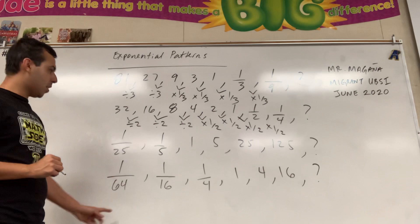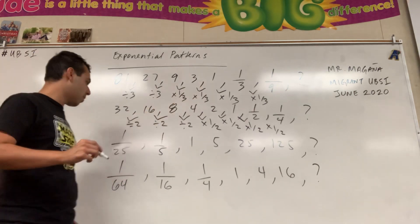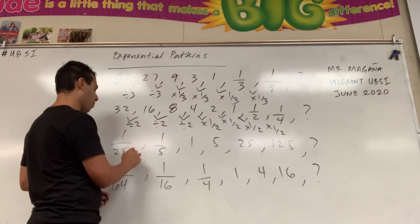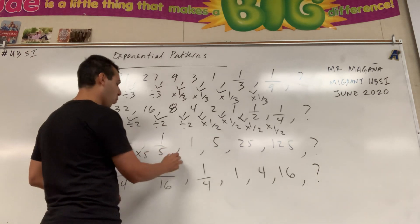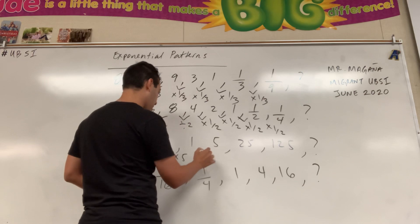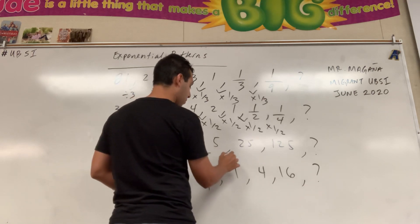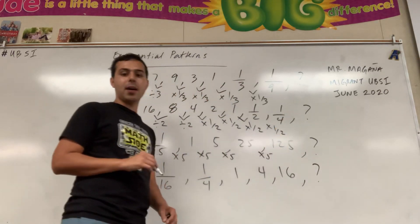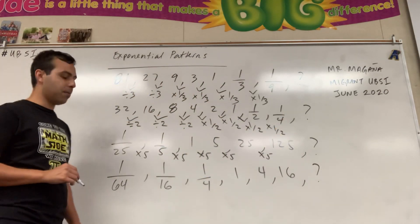Over here the patterns are increasing, not decreasing like these, so we could multiply times the whole number 5 to get the next number in pattern, which can help you find that number at the end of that pattern there.